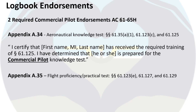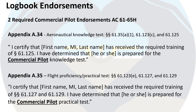The next required endorsement can be found in appendix A.35, where your instructor must certify that you have demonstrated the flight proficiency to take the practical test according to FAR 61.123(E), 61.127, and 61.129. Here's an example of what this endorsement would look like.